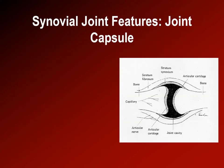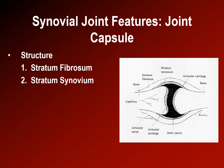The capsule has two parts: the stratum fibrosum, which is collagenous connective tissue, and the stratum synovium, which is not very strong but is very vascular. The function of the capsule is support. Some ligaments in certain joints are not very strong — they're just thickenings in the capsule, as is true of the glenohumeral ligaments.